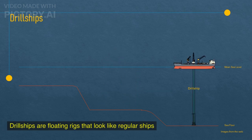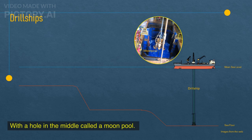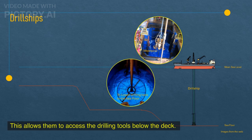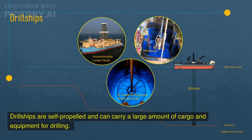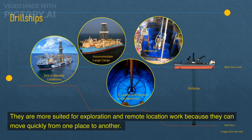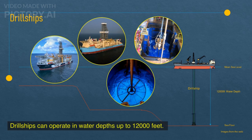Drill ships are floating rigs that look like regular ships, with a hole in the middle called a moon pool. This allows them to access the drilling tools below the deck. Drill ships are self-propelled and can carry a large amount of cargo and equipment for drilling. They are more suited for exploration and remote location work because they can move quickly from one place to another. Drill ships can operate in water depths up to 12,000 feet.